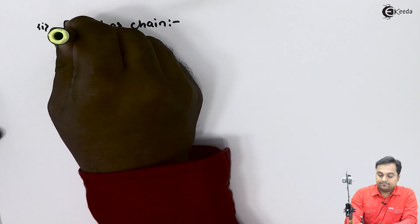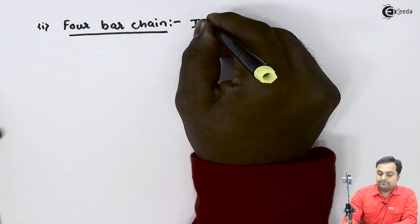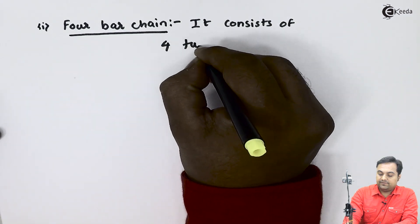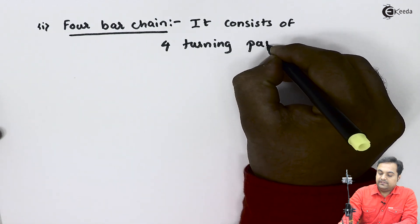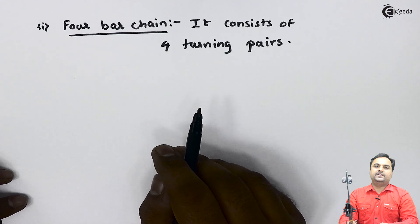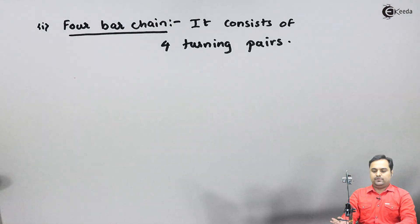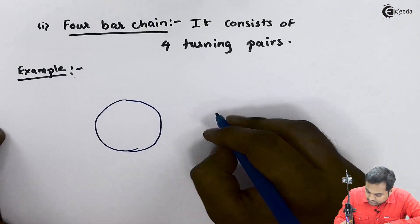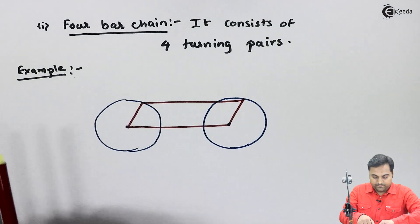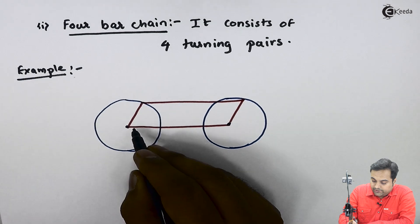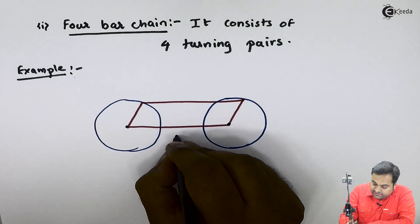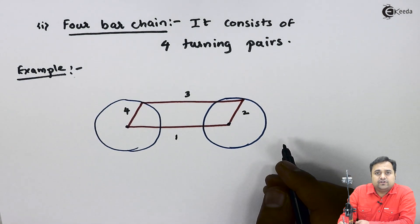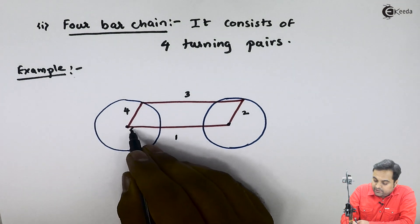The 4-bar chain consists of four turning pairs. In a 4-bar chain, the sliding pair is absent — we have only turning members, no sliding members. Here I have drawn the diagram of a 4-bar chain example with four links: link 1, link 2, link 3, and link 4. As per the definition of inversion, I will keep link 1 as fixed.